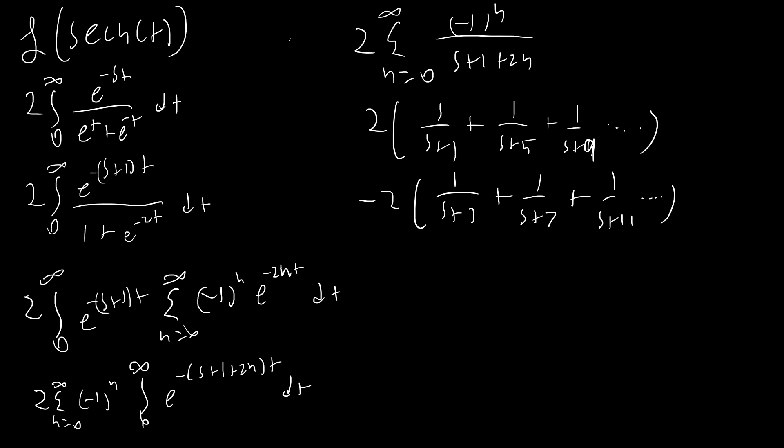On the bottom, we're changing by four in each jump. We can convert these sums into a form that's easier to deal with if we have it changing by one each time. To change a step of four into a step of one, all we do is divide by four — dividing by four top and bottom. So on the top that changes the 2 to a 1/2, and we get s/4 + 1/4, s/4 + 5/4, s/4 + 9/4, etc. And similarly s/4 + 3/4, s/4 + 7/4, s/4 + 11/4.